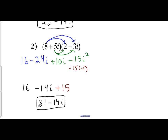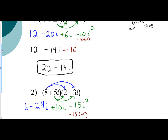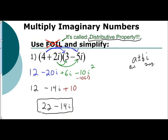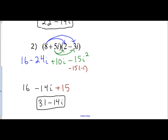And that's how you're going to multiply with imaginary numbers. You distribute, combine like terms, and make sure you simplify i to any power. Then get your answer.